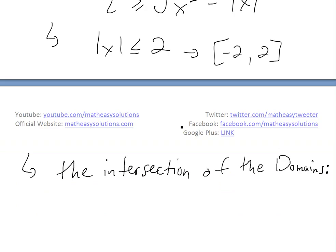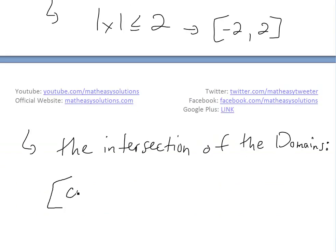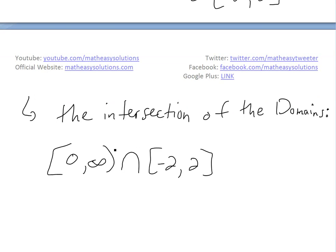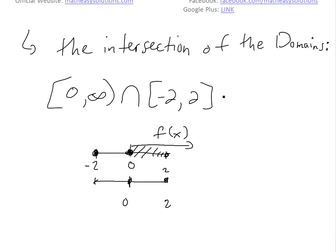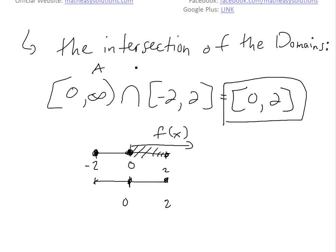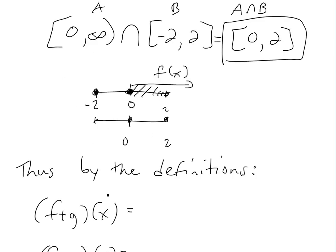Now we need to find the intersection of the two domains: [0, ∞) intersect [−2, 2]. Looking at a number line, f(x) is defined from 0 onwards, and g(x) is defined from −2 to 2. The region where both are defined is from 0 to 2, closed intervals. So the intersection A ∩ B = [0, 2], or equivalently 0 ≤ x ≤ 2.